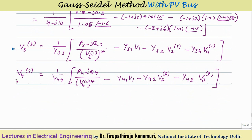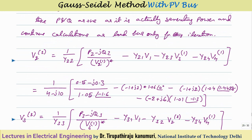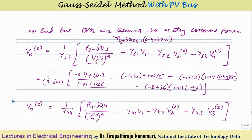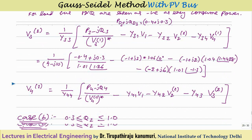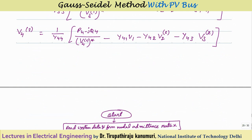Now for the load buses (buses 3 and 4): V3(2) = (1/Y33)·[(P3 − jQ3)/V3(1)* − Σ Y3k·Vk]. For load buses, P and Q must be taken as negative since the bus consumes power. For bus 3, given power 0.4 + j0.3, take P3 = −0.4 and Q3 = −0.3. Then P3 − jQ3 = −0.4 − j(−0.3) = −0.4 + j0.3. This procedure is repeated for all buses until convergence is reached.